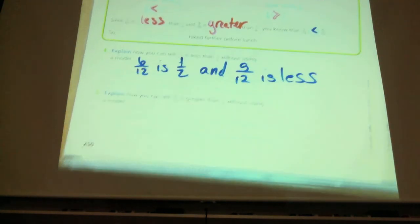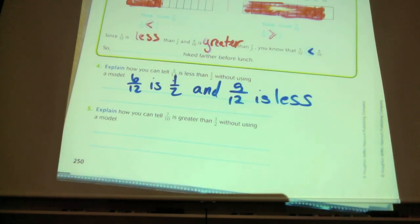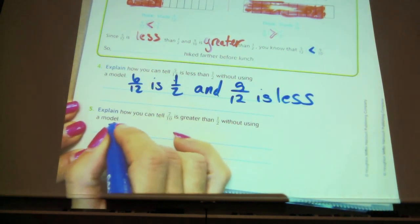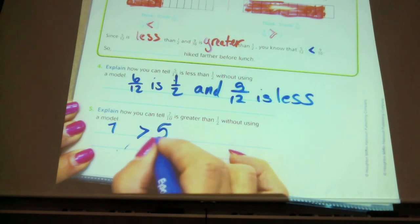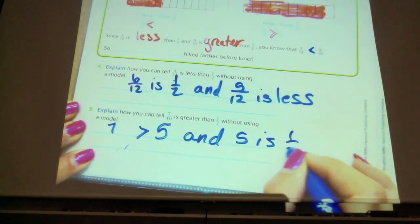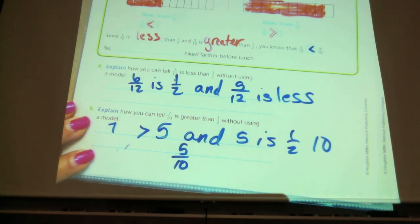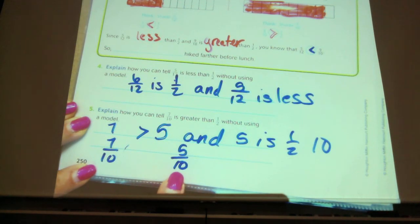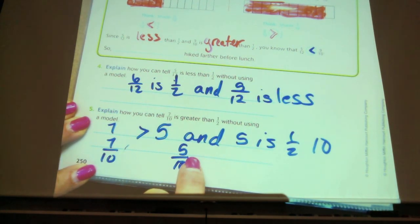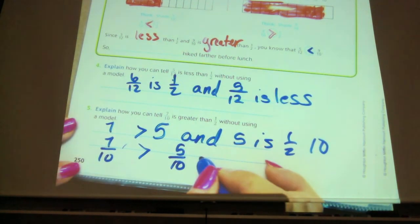How can I tell that seven-tenths is greater than a half without using a model? He said I can tell because seven is greater than five. And five is one-half of ten, which is how we said that we can find the equivalent fraction. So basically he has done taking the seven-tenths and said five is half of ten. So if the denominator is ten, half of that would be five. And seven is greater than five. So therefore I can tell that seven-fifths is greater than five-tenths, which equals a half.